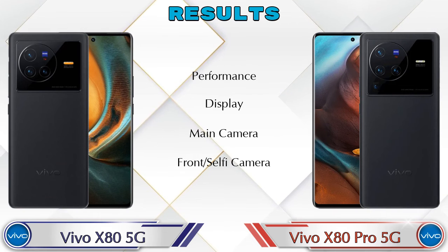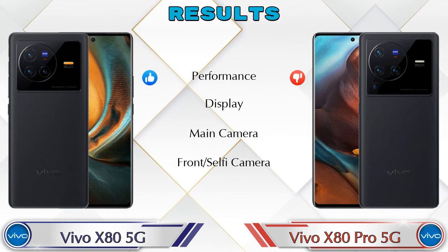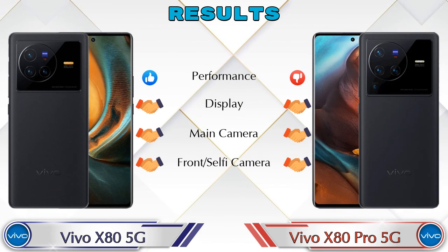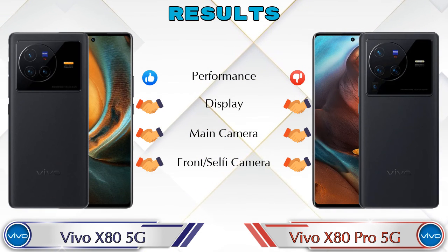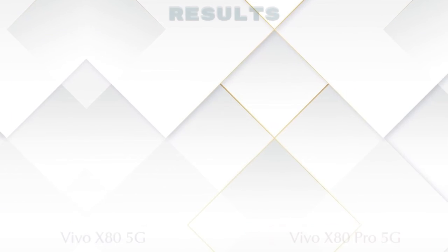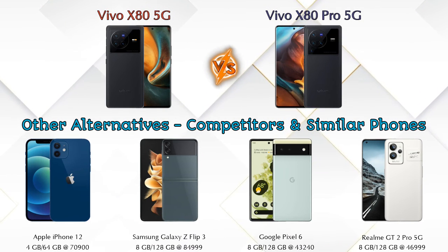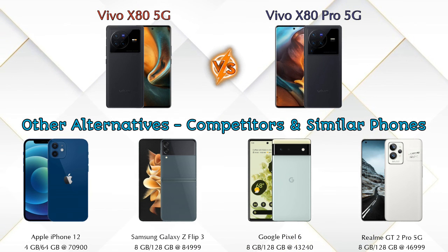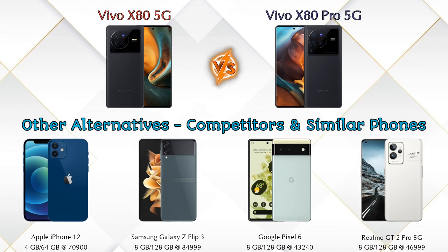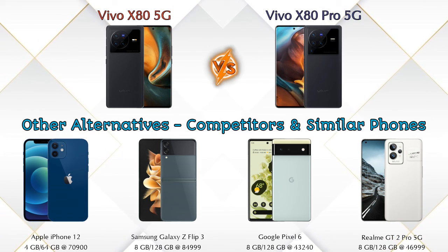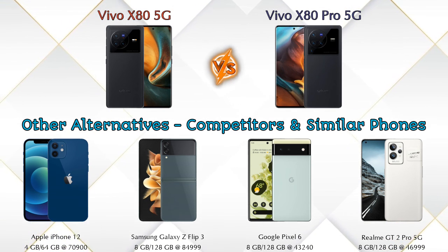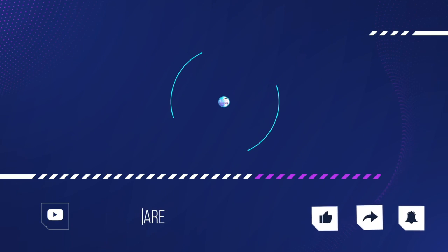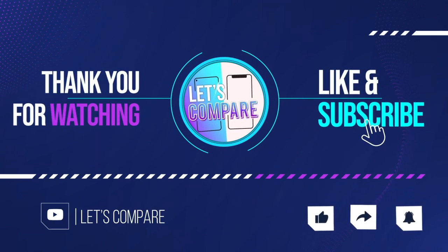Finally, talking about results: in performance, the Vivo X85G is ahead. In display, both phones are the same. In main camera and front selfie camera, both phones are the same. Now, other competitors at the same price include the Apple iPhone 12, Samsung Galaxy Z Flip 3, Google Pixel 6 5G, and Realme GT2 Pro 5G. Details about all these competitor phones are available in the description. If you like our video, please like and subscribe. Thanks for watching.